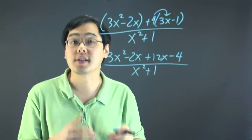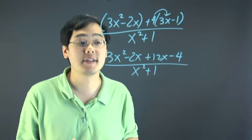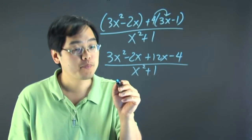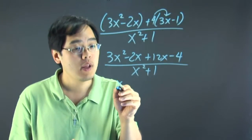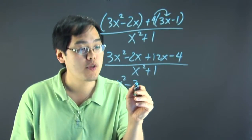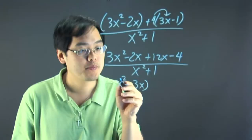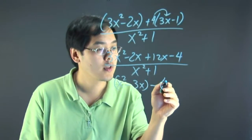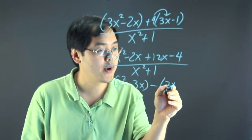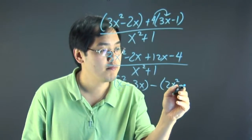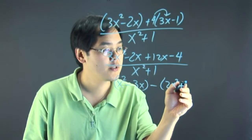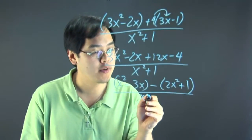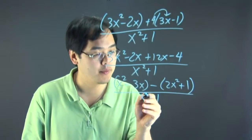Now if you have subtraction, it's going to be a little bit different. Suppose you have (x squared minus 3x) minus (2x squared plus 1) over (x squared plus 1).